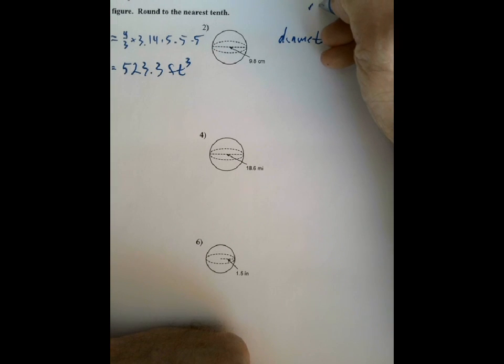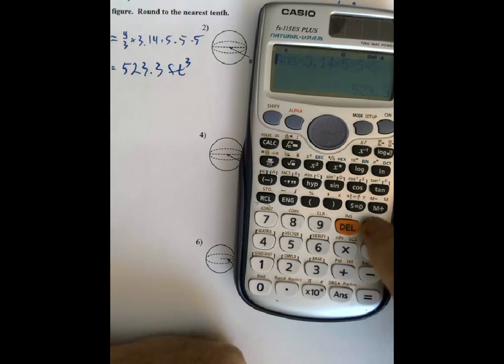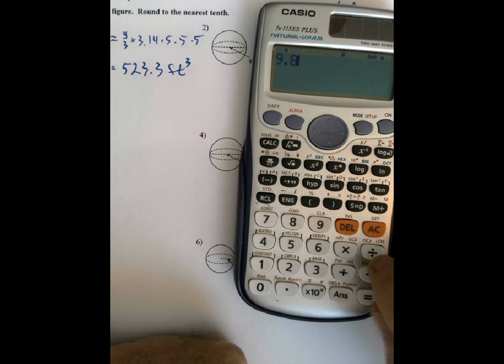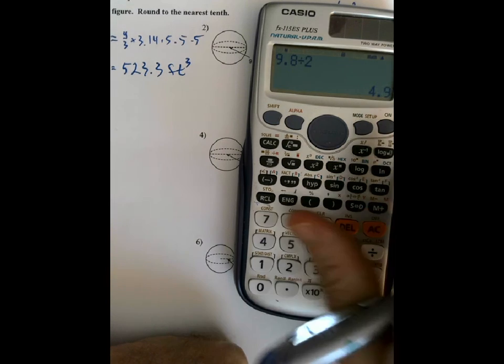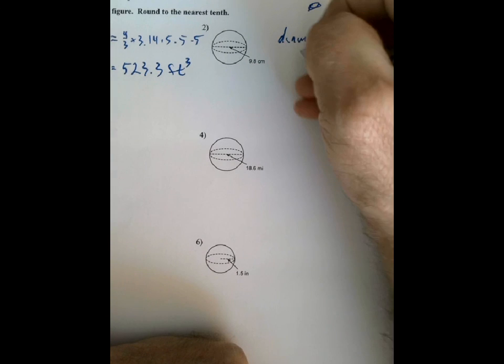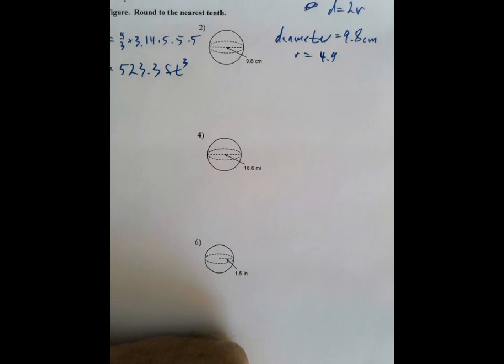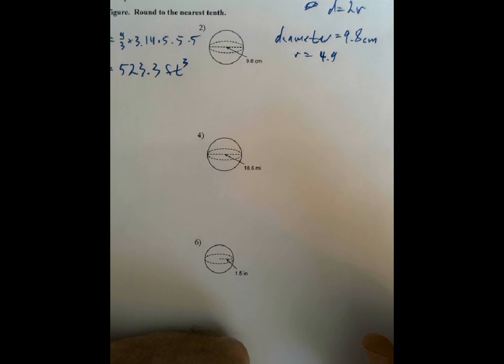So, how do I get the diameter from that? Well, remember the radius, or rather the diameter is 2 times the radius. So, I'm going to take 9.8, divide it by 2, and it's 4.9. So, if the diameter is 9.8, the radius has to be 4.9, which is half of it. So, in the volume formula, you have to use the radius to get the right answer.